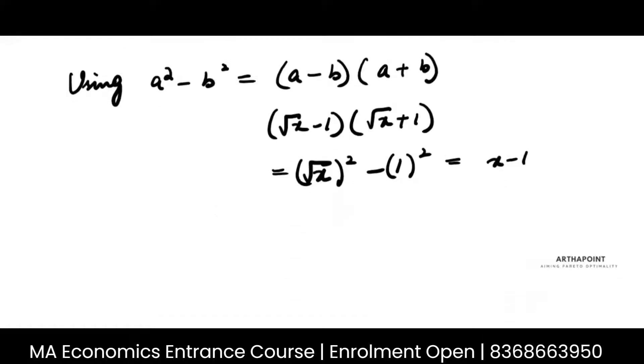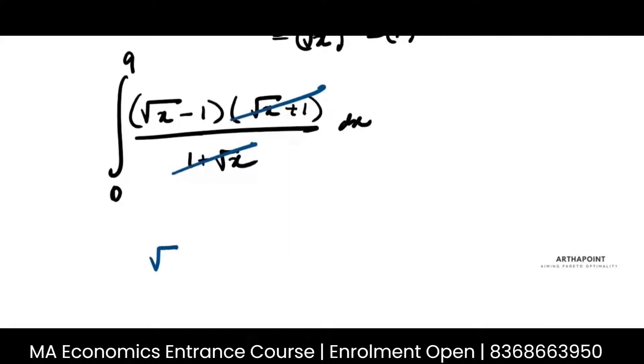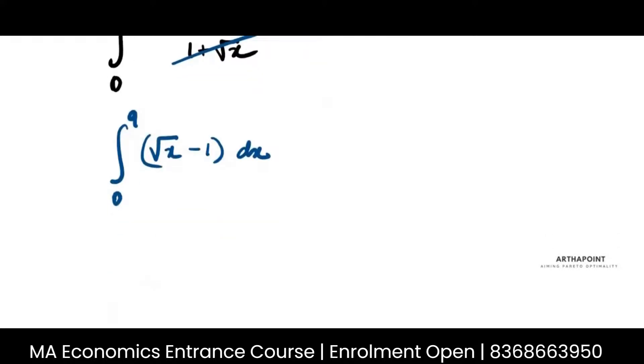So x minus 1 can be rewritten as root x minus 1, root x plus 1 upon 1 plus root x dx from 0 to 9. You can go ahead and rewrite this as x to the power half minus 1 dx from 0 to 9.